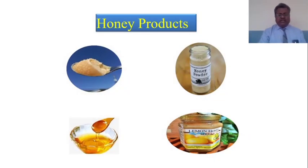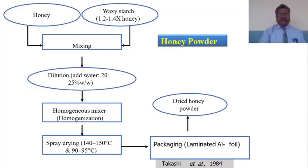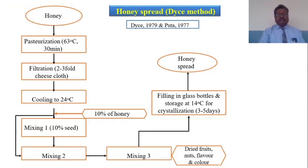When we see honey products, there are two main honey products: honey powder and honey spread. In the production of honey powder, honey is mixed with wax starch and through this process a durable honey powder is produced. Another product is honey spreads, which are also produced using honey and are usable for a longer time.